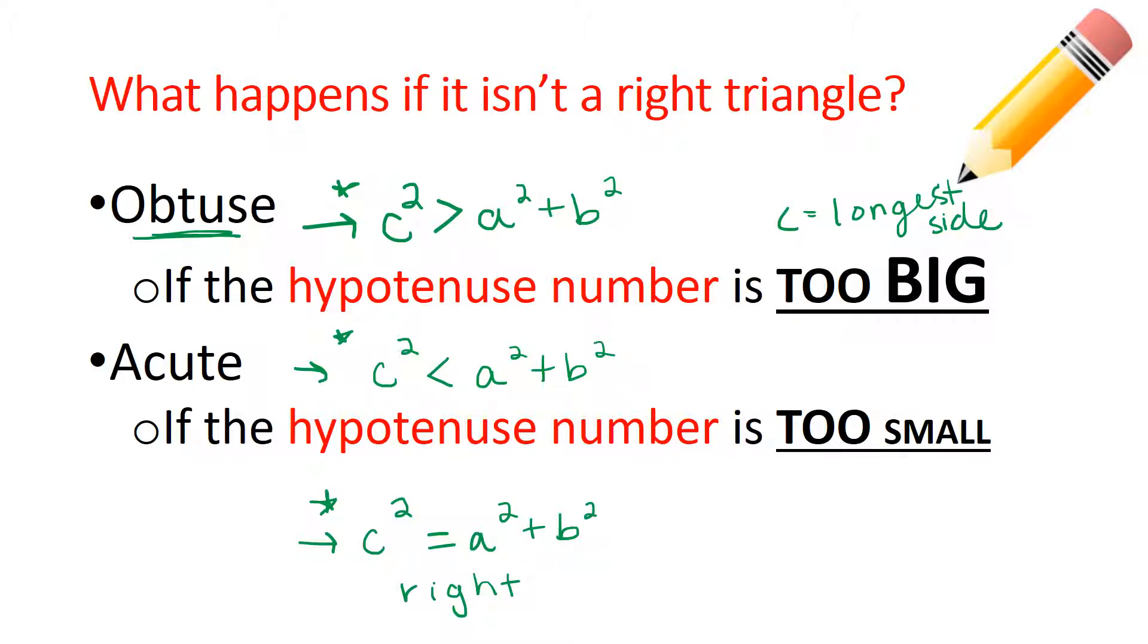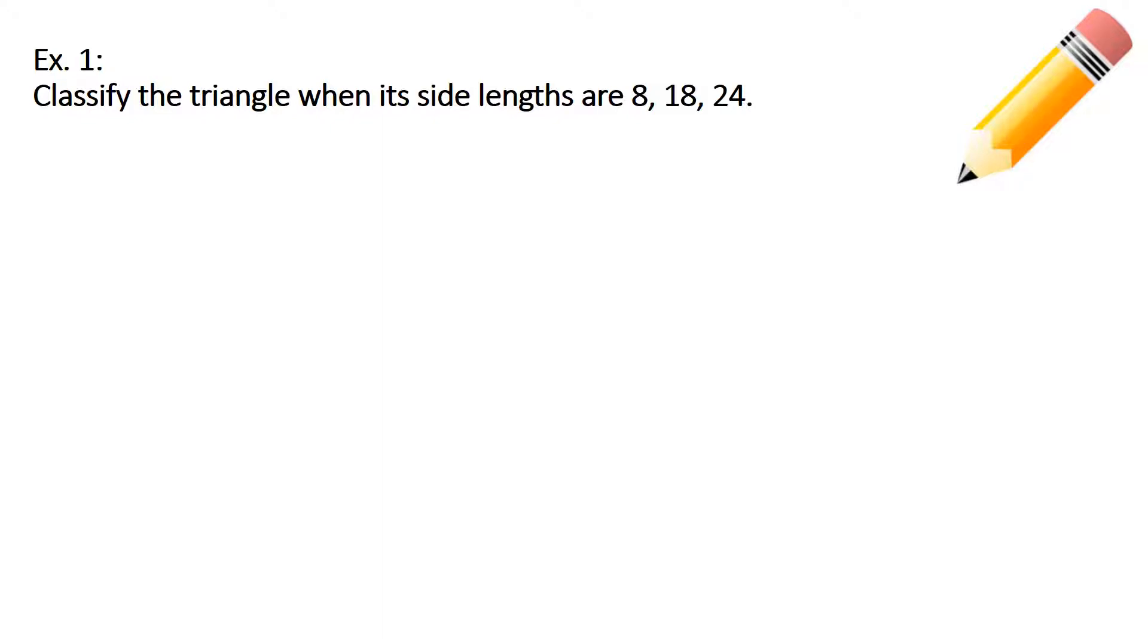In example number one, we want to classify the triangle when its side lengths are 8, 18, and 24. So what this means is I need you to tell me or help me figure out if this is an acute triangle, an obtuse triangle, or a right triangle. So when we get started here, you can either start by drawing a triangle if you would like and labeling its sides, or you can just feel out the numbers a little bit. But the only one you have to know, it would be the C value. The C value is the one that's going to stand alone. So we want to make sure that we figure that out first.